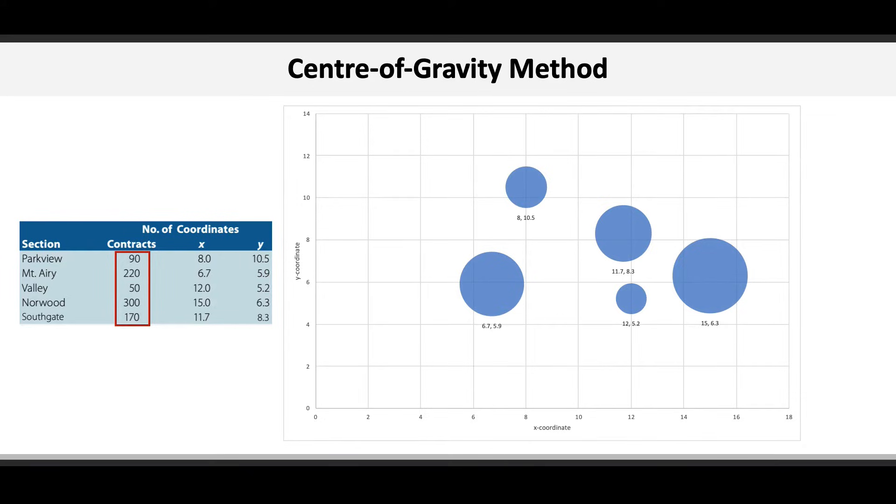Like the gravity exerted by large and small planets, they all pull on a body, and the bigger planets exert more pull than the smaller ones. The center of gravity method therefore recognizes this effect and helps us find the optimal location closer to larger service areas.